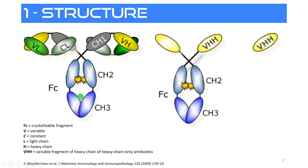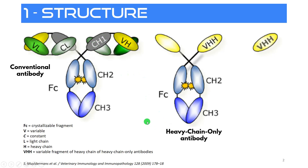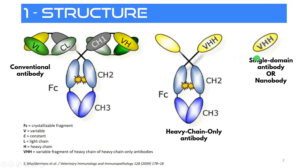In terms of structure, you probably know this structure, which is a conventional antibody. It has a heavy chain and a light chain — two of each. But there are heavy chain-only antibodies, which only have the heavy chain and only three domains. If you take the variable part — which binds to the antigen — of the heavy chain of heavy chain-only antibodies, you have what is called a single-domain antibody, also called a nanobody.